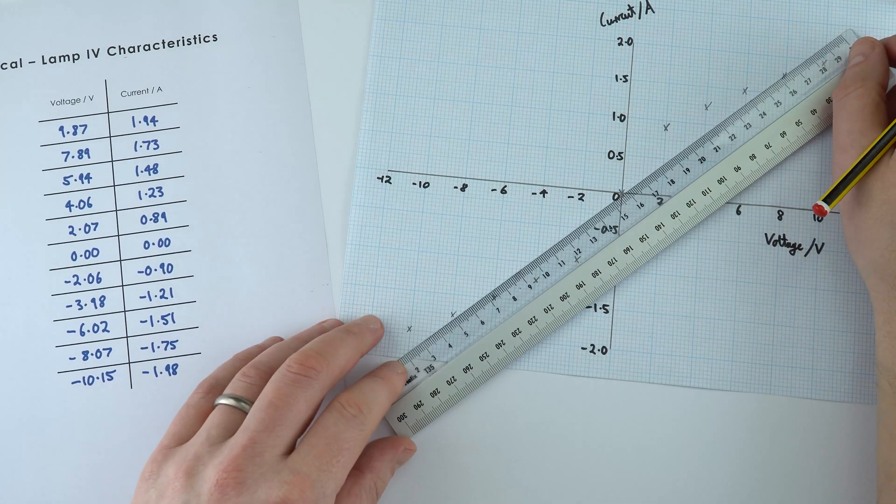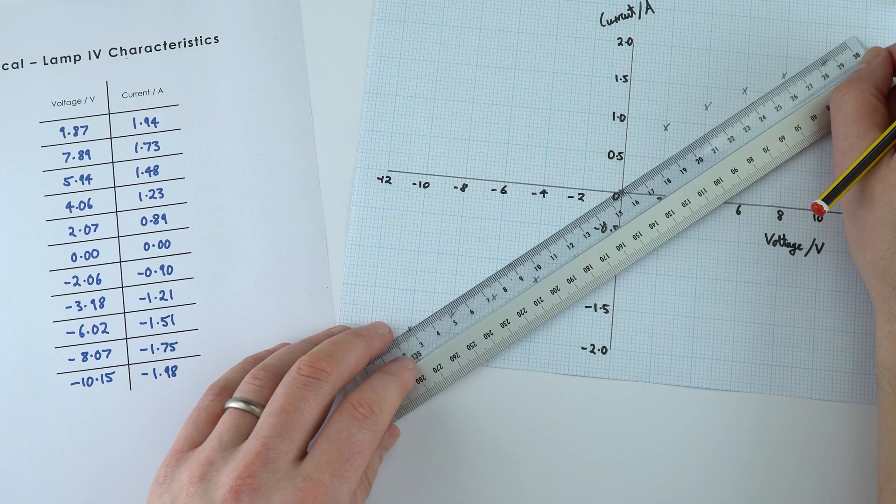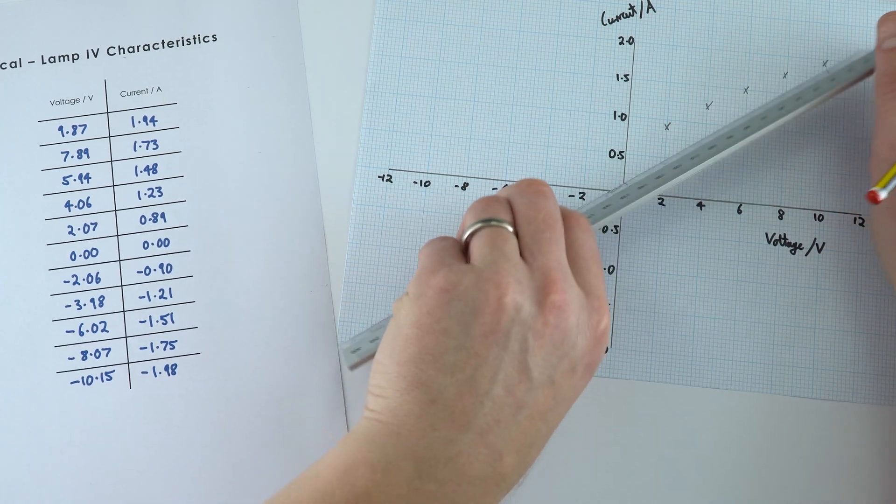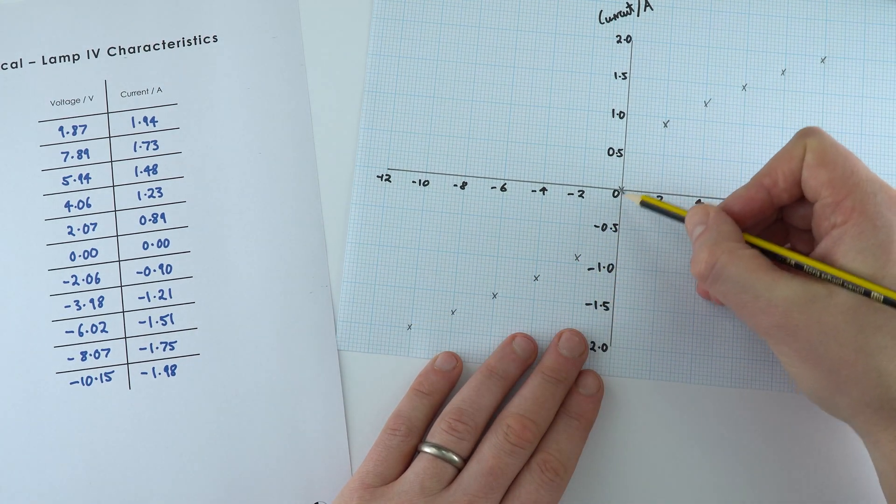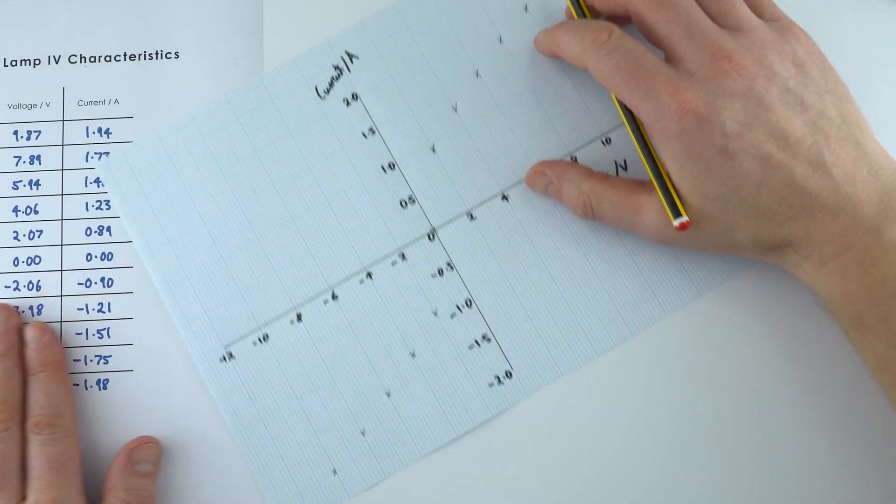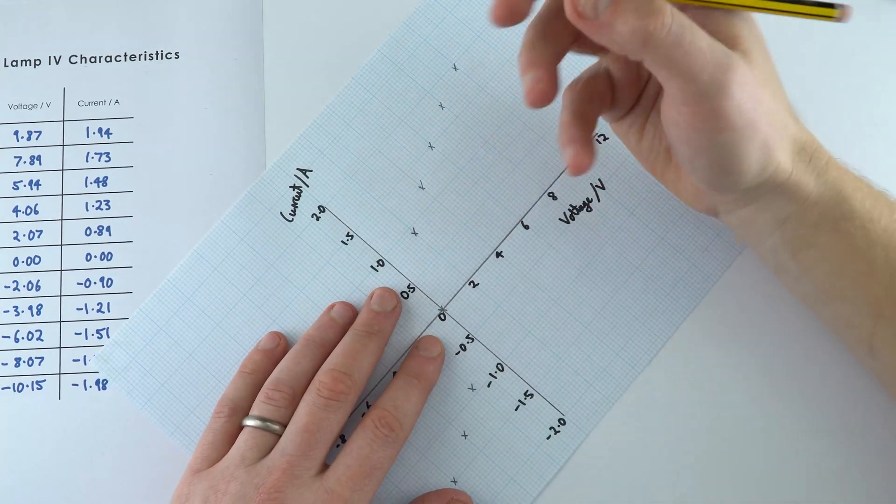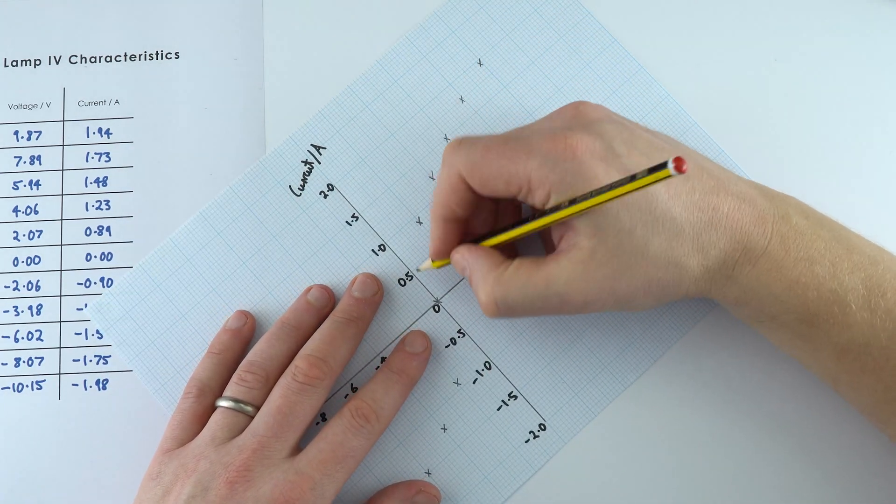Again we can see that maybe if we put our ruler here we can't really draw a straight line of best fit so that means we're going to have to have a curved line of best fit and it's going to be kind of going here and around here. So if I just draw that like so and again this is why I've used a pencil in case I make any mistakes.